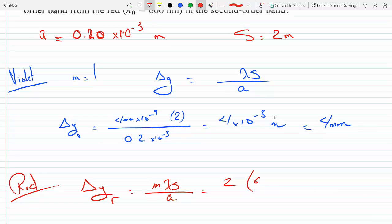2, lambda for red is 600 times 10 to the minus 9, change it to meters. Of course, the distance from the source and the width of the slit doesn't change here, so this is 2, and this here is 0.2 times 10 to the minus 3. And so if we do the math here, we will get—plug this on the calculator.